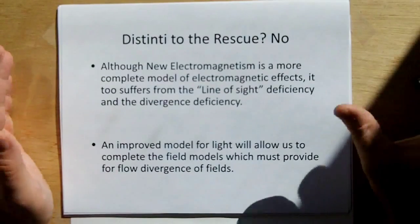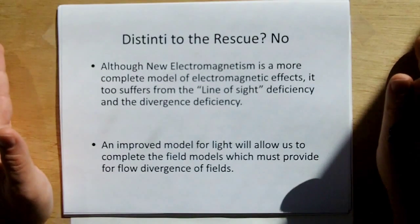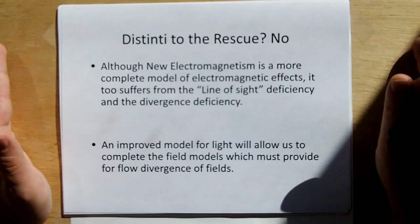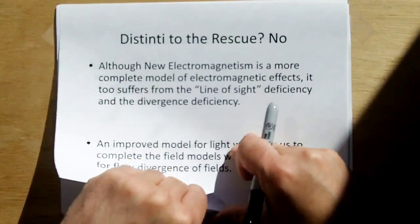Are my models new electromagnetics? No. My models suffer the same problem. They're line-of-sight models which do not account for the diffraction, or sorry, the divergence of the fields. So we need an improved model of light to allow us to actually go and complete the electromagnetic field models.